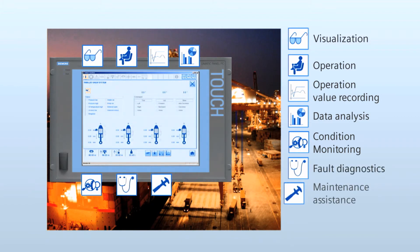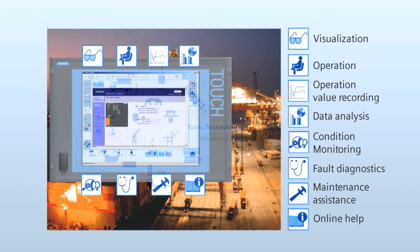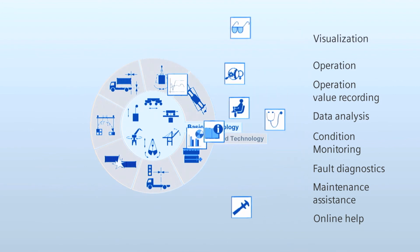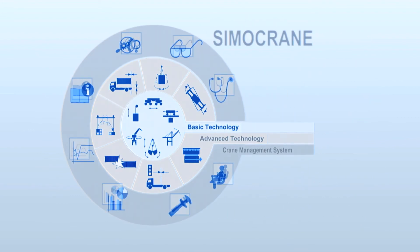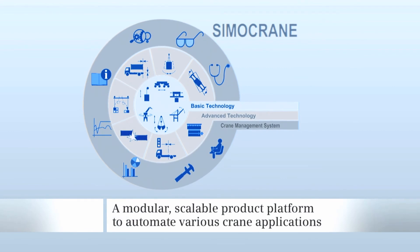A maintenance assistant and an online help which contains corresponding information and documentation of the installed components of the crane. All these functionalities are the last step on the way to the fully automated crane, and are realized in the Simocrane crane management system. A central remote access on several cranes can also be realized. Now the Simocrane platform is complete, and is usable as a modular, scalable product for automating all types of cranes up to the highest level.